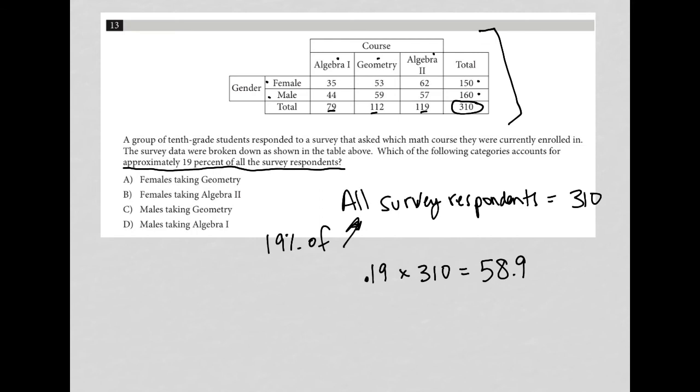So again, the question says, which of the following categories? Choice A says females taking geometry. So females taking geometry is here. That's 53. B says females taking algebra 2. Female and algebra 2, that would be here. That's 62.